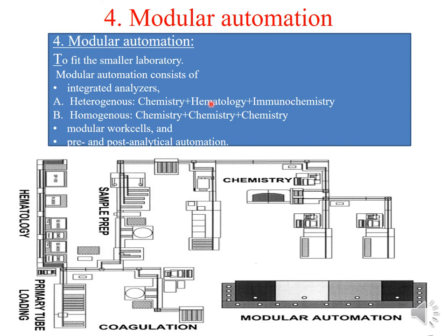For example, chemistry, hematology, and immunochemistry analyzers are integrated. In homogeneous analyzer integration, all analyzers carry out the same work — for example, three chemistry analyzers are integrated together. Apart from integrated analyzers, there are also modular work cells.